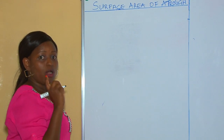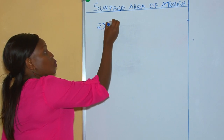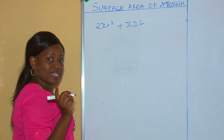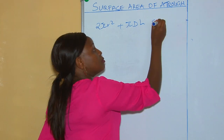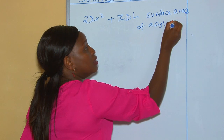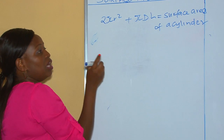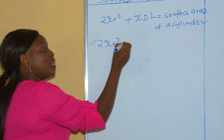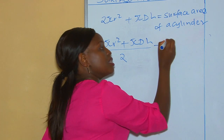You need to begin by getting the surface area of a cylinder, which is 2πr² + πdh. Therefore, the surface area of a trough is half of the surface area of a cylinder. To get the surface area of a trough, since a trough is half of a cylinder, it is just (2πr² + πdh) divided by 2. This becomes the surface area of a trough.